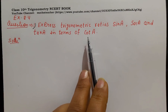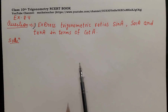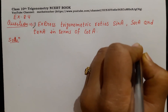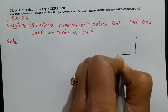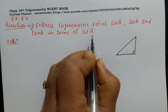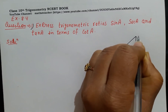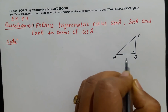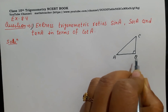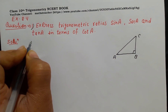We can solve this question using two methods — triangle method and identity method. In trigonometry we work with right angle triangles. Let's draw a right angle triangle where the angle A is acute. Angle B is 90 degrees. AB is the base, BC is the perpendicular, and AC is the hypotenuse. We will solve the triangle method first.